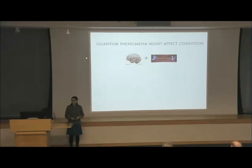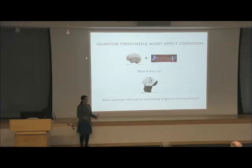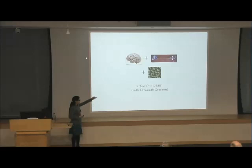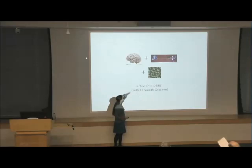What if it's right? What if quantum phenomena do affect cognition? We know that quantum systems can be used to process information in ways that information can't be processed if we have only classical resources. So what quantum information processing might be happening up here? That's what I want to focus on. That's why I wrote this paper with a colleague of mine at Caltech last year. Matthew put together cognition with quantum phenomena. We added in the information processing.